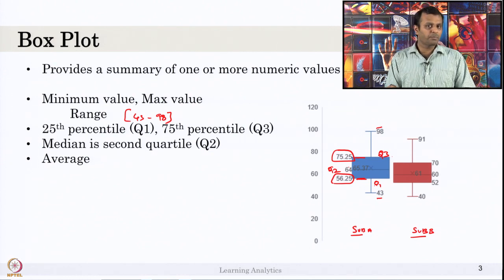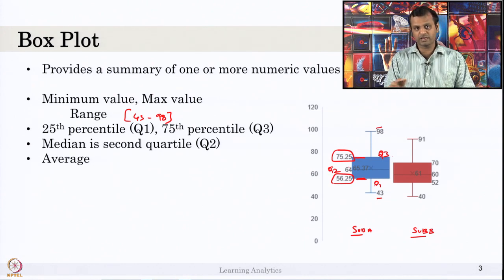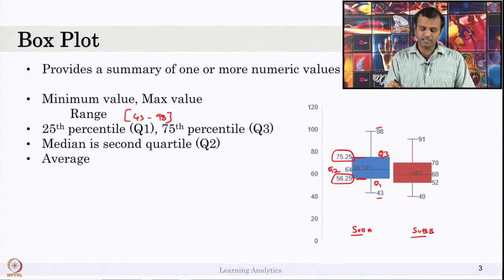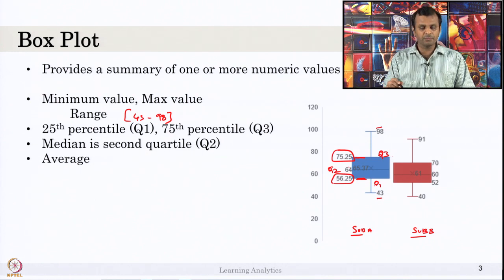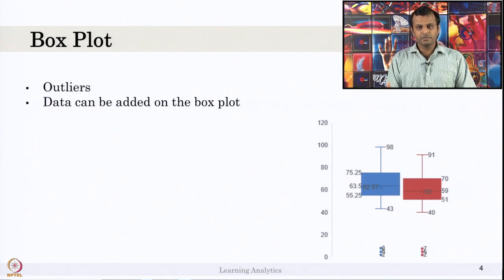By box plot, you can get the distribution of data — not like a histogram — but you can get the distribution of data and details like range, deviation in each quarter — everything can be seen from the box plot. In a box plot, we can also have outliers.